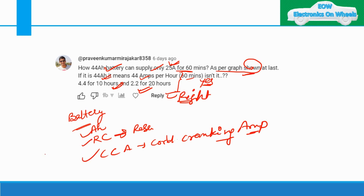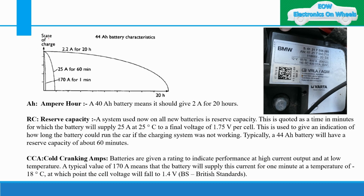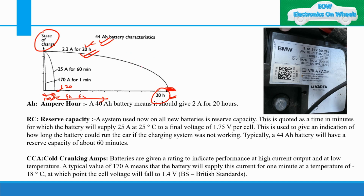Moving to the graph I explained earlier: this shows state of charge versus time. The graph has 10 parts — two hours, four hours, six hours, up to 20 hours. One part represents 120 minutes. So 2.2 amps of current will be provided by a 44 AH battery for 20 hours, draining until state of charge is zero. This is the definition of ampere hours. This is my AH graph.